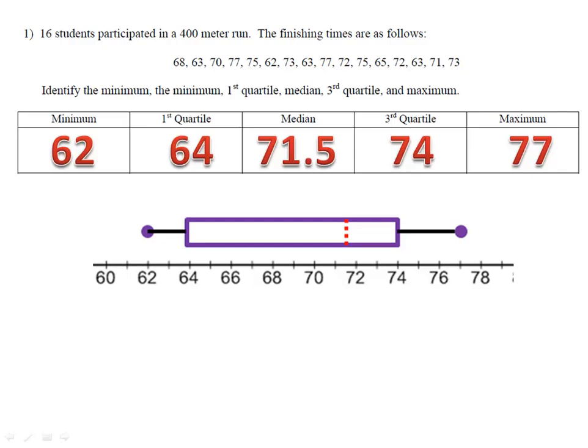What exactly does this mean? If you look at each section, we have 25% of all the students in each section. Between 62 and 64, 25% of our scores were in that range. From 64 to 71.5, another 25% of our scores are in that range. From 71.5 to 74, another 25% of the students had scores in that range. And finally, from 74 to 77, 25% of our students had scores in that range.